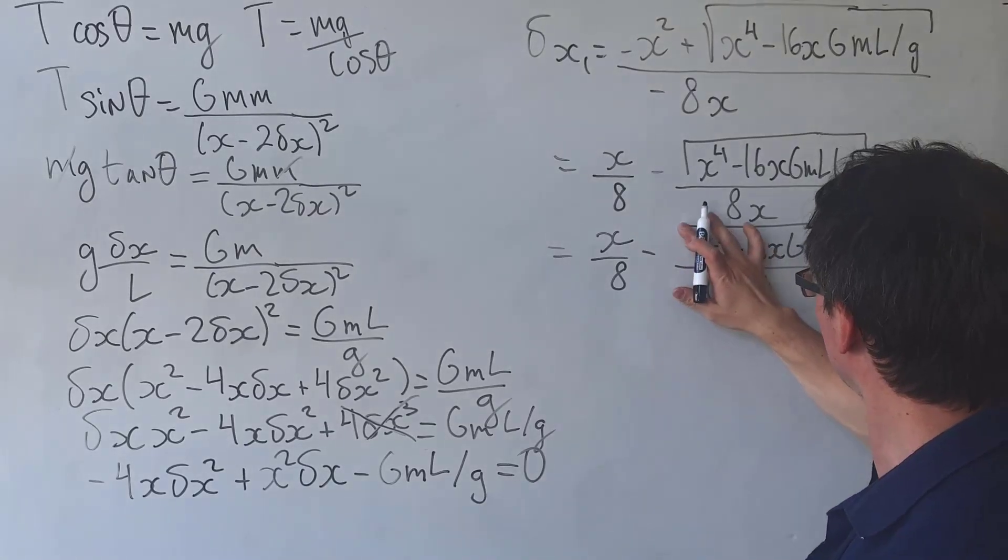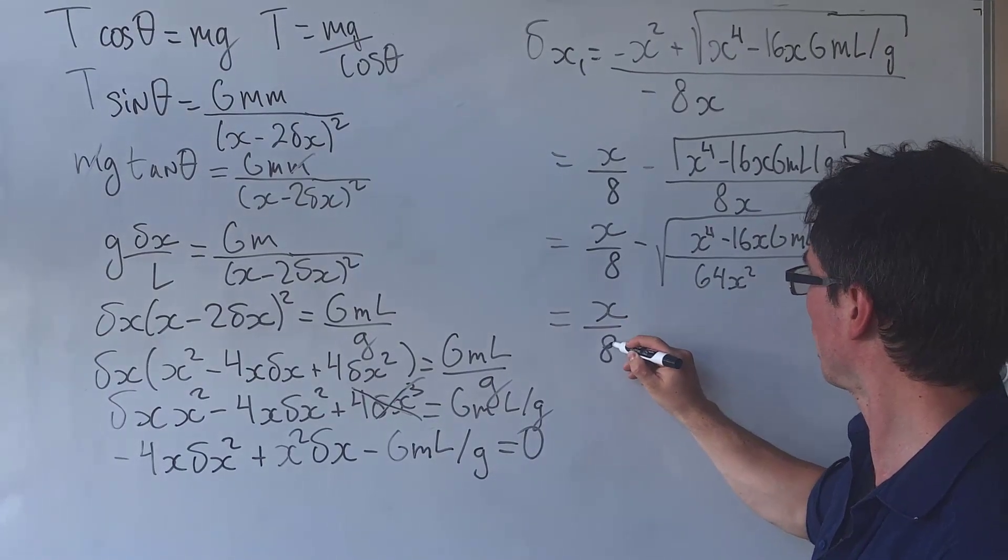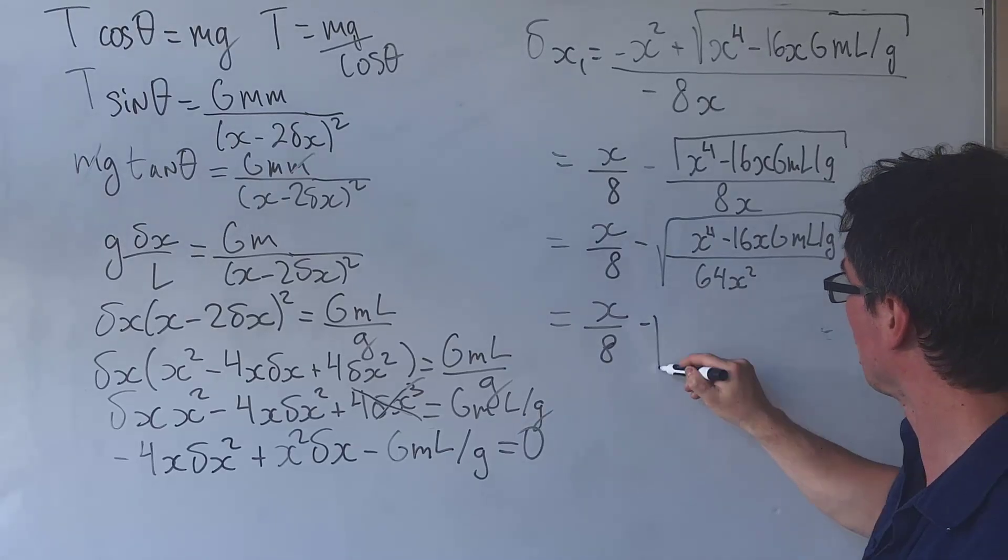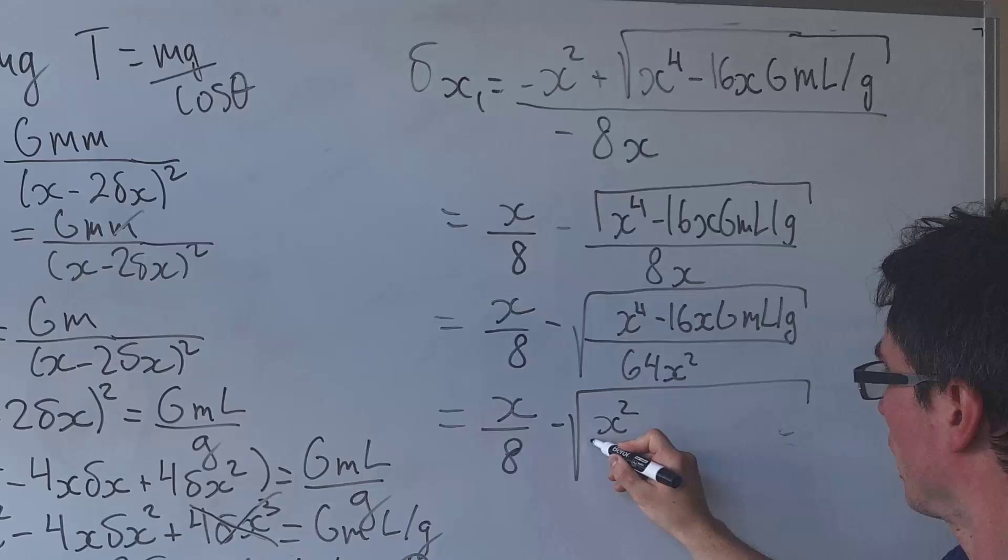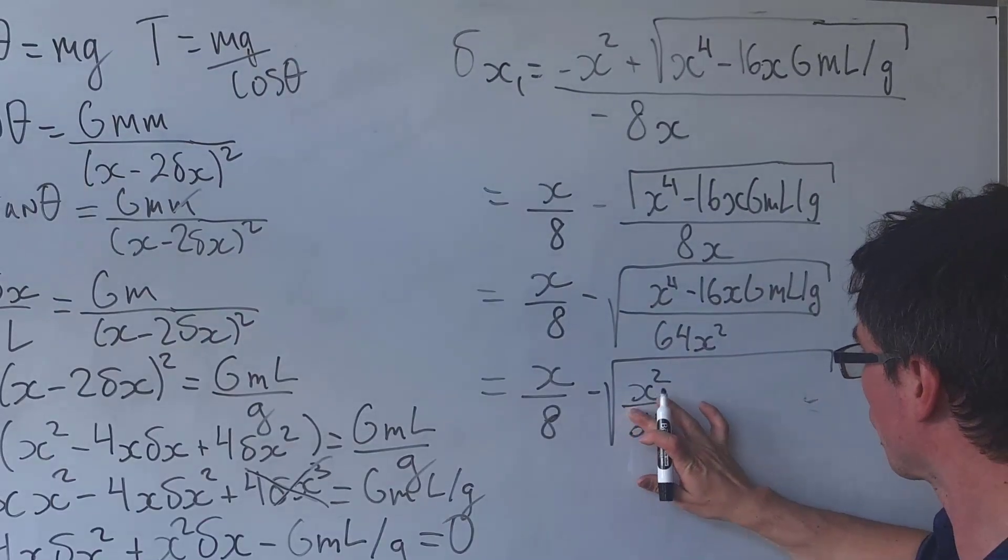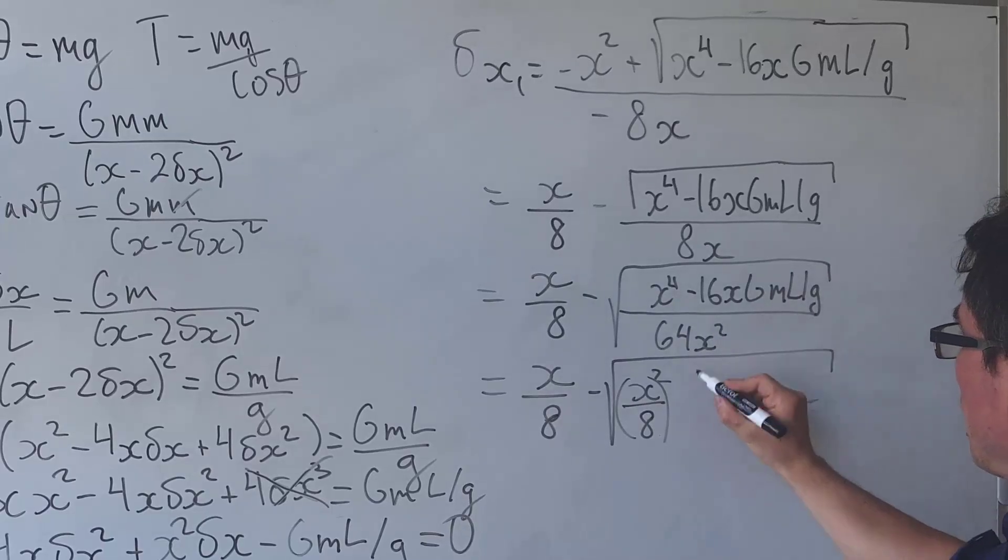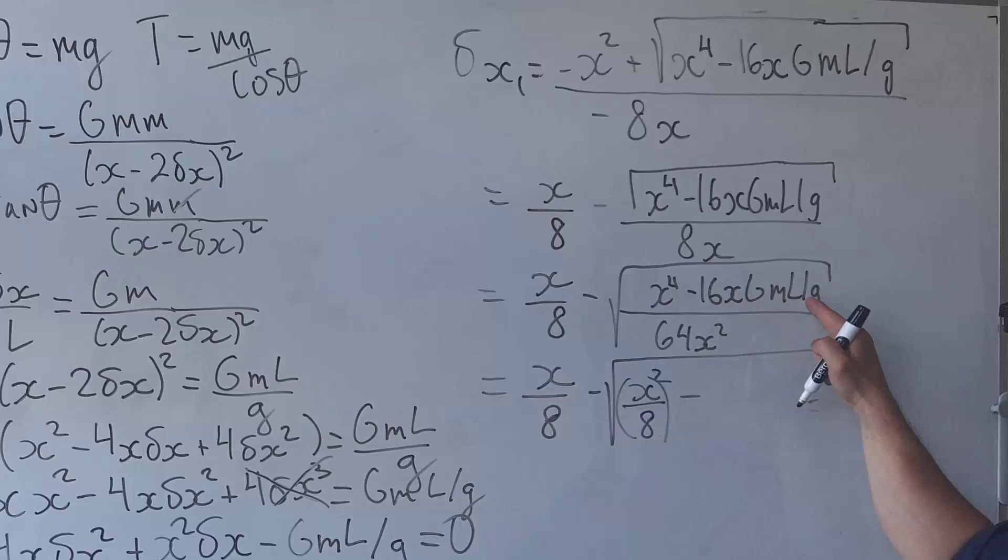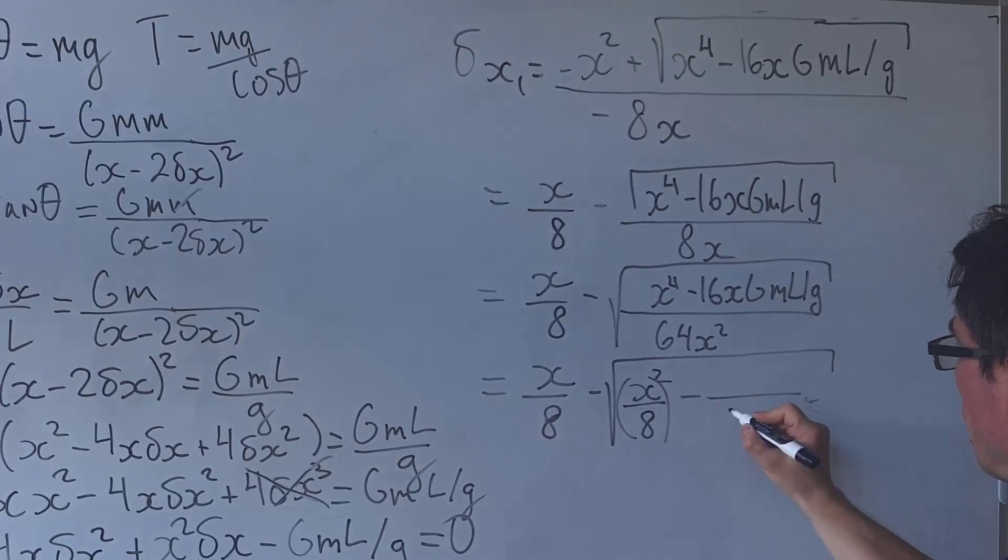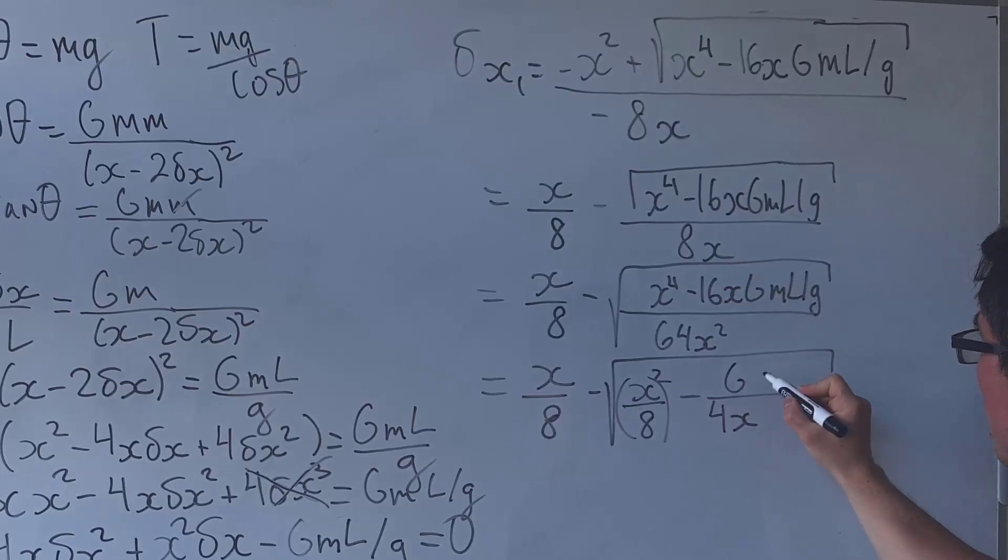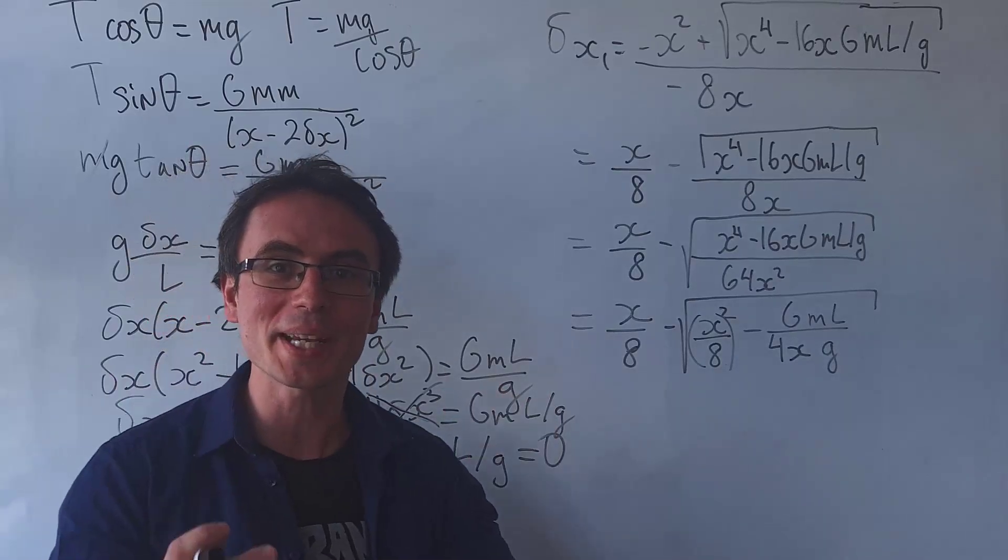Now I'm just going to square root this entire expression. So we can just write it like so, which will in terms be equal to x over 8 take away the square root of x to the power of 4 divided by 64x squared will just give me x squared over 64, which is of course just equal to x over 8 brackets squared, and then we're going to take away 16x gml over g divided by 64 squared. So this will just be giving me 1 over 4x and then we're going to have a factor of gml and then we're going to have a g on this side. And this is the very expression that we're trying to prove.